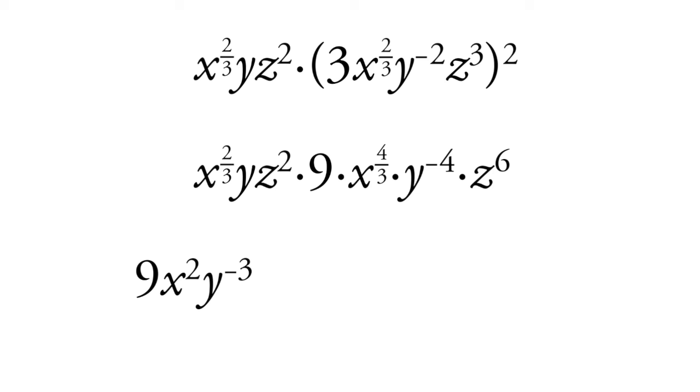And then for our z terms, we have z squared, and we're multiplying it by z to the 6th. So z to the 2 plus 6 equals z to the 8th.